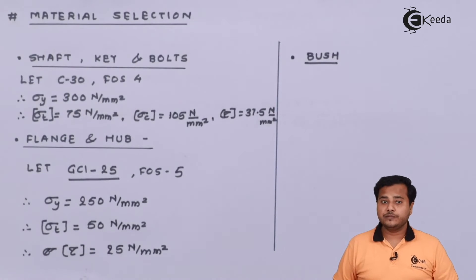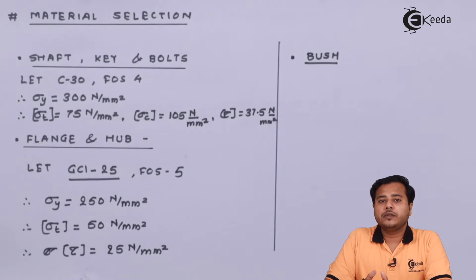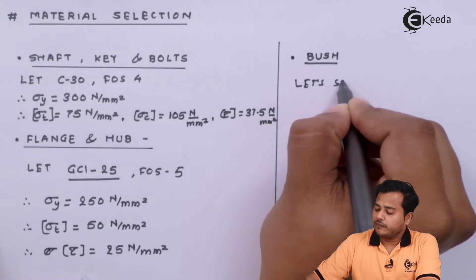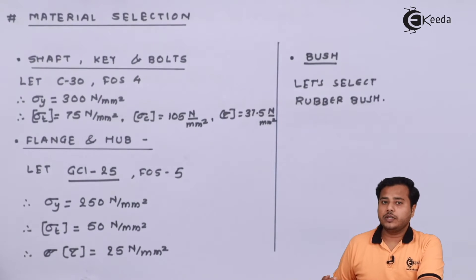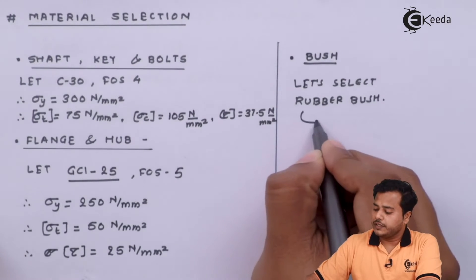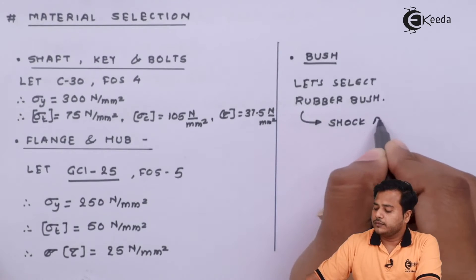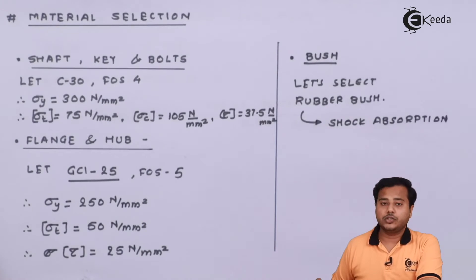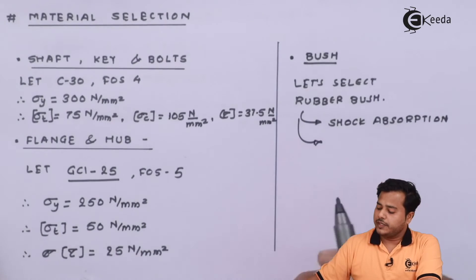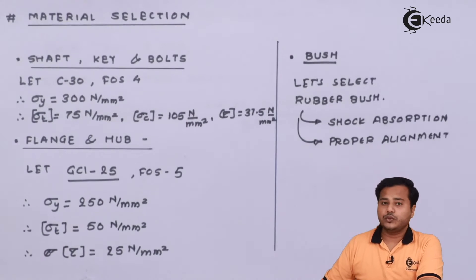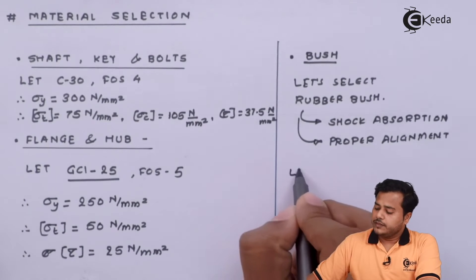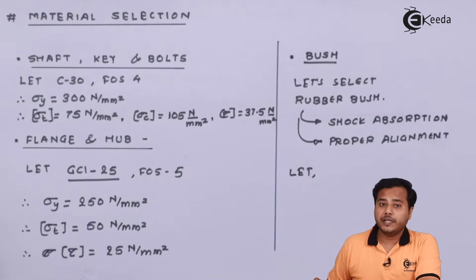The last thing is bush. So we know that the bush are generally made up of the smooth material or the plastic material which is like a rubber. So let us select a rubber bush. Now there are two important benefits of this. The very first benefit is shock absorbing or shock absorption. And the next thing we have is the proper alignment of course due to the material properties.